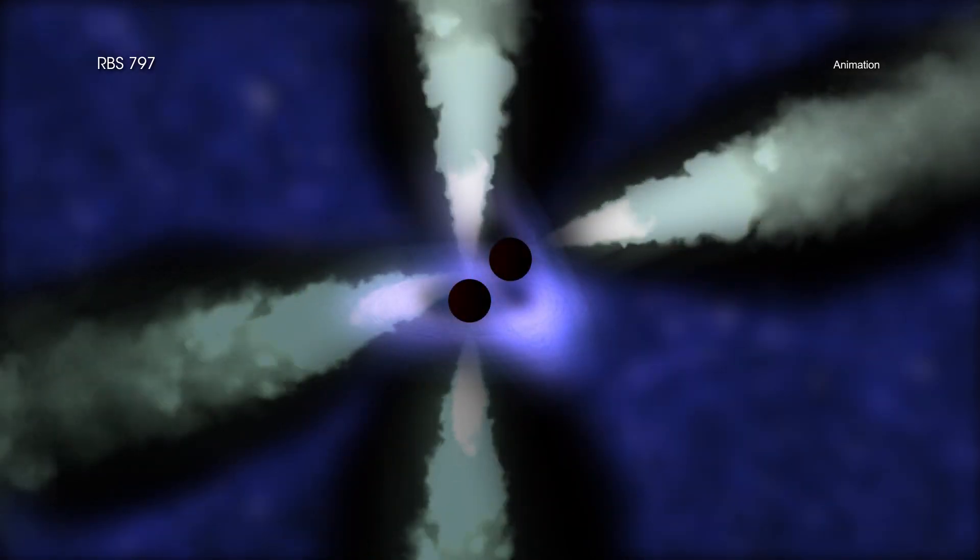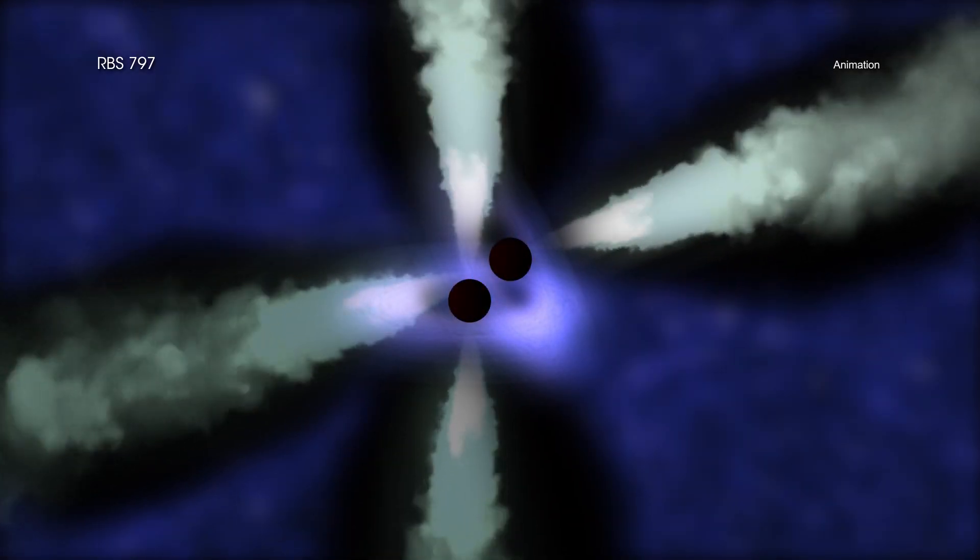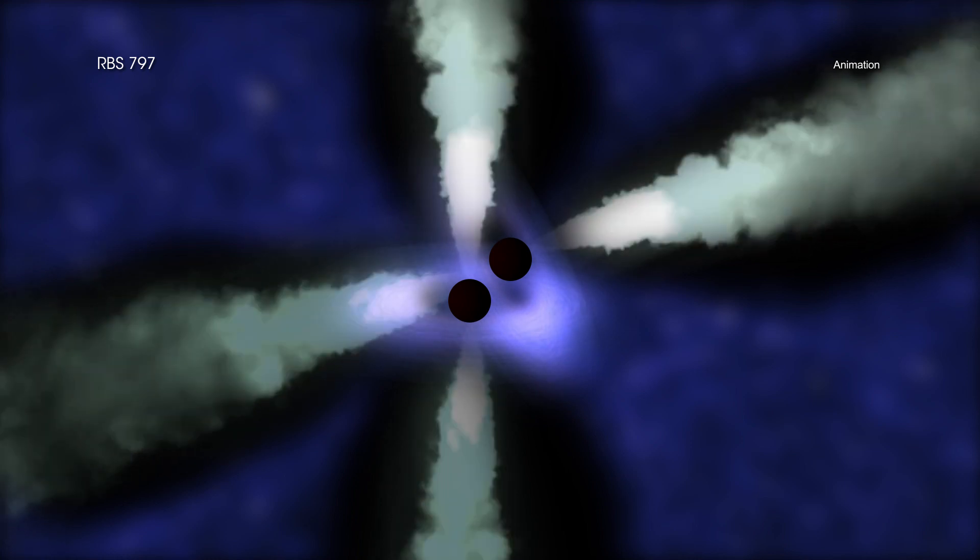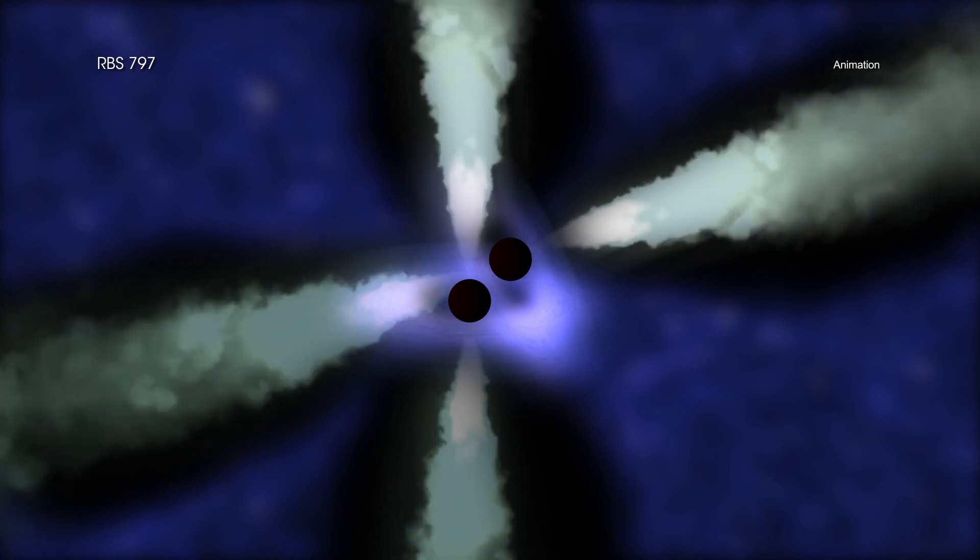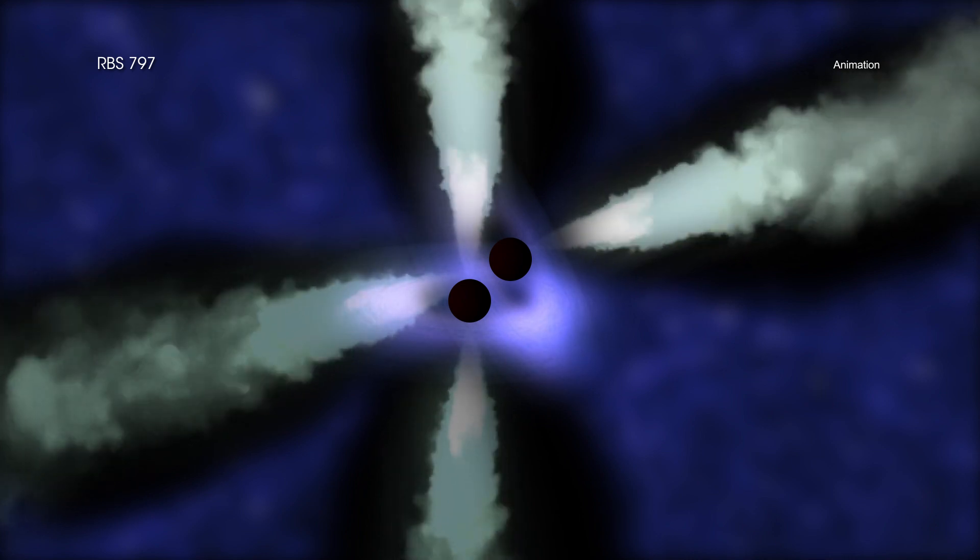How was this quartet of cavities created? The most likely answer, according to the researchers from the new study, is that RBS 797 contains a pair of supermassive black holes that have launched jets in perpendicular directions at almost the same time.